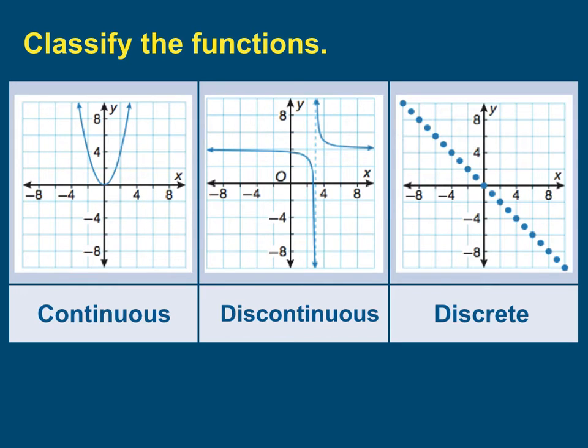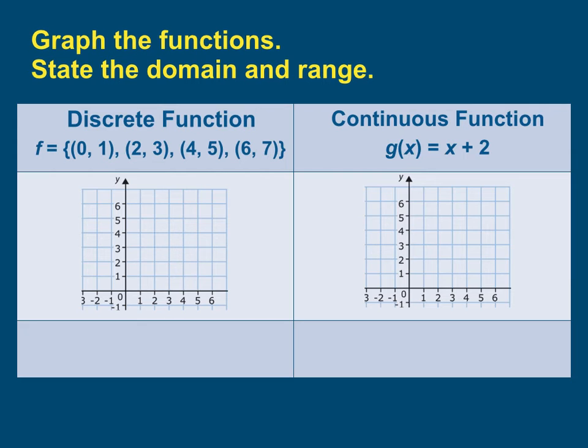So now getting practice graphing functions like this. Here I'm given a set of ordered pairs. I'm told that it's a discrete function. So I'm going to graph these points: 0, 1, then 2 to the right, 3 up, 4, 5, and 6, 7. And although they lie in what appears to be a straight line, we are not going to connect these points because we're told that the function is discrete.